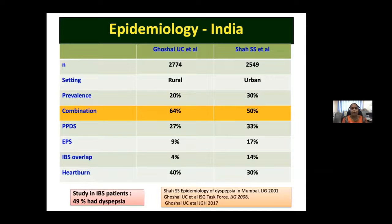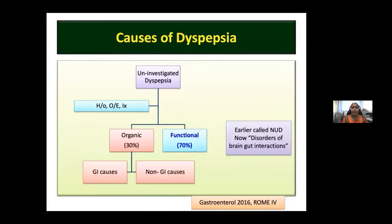About 4 to 14 percent of dyspeptic patients have heartburn, which does not necessarily translate to GERD. In a large study, 49 percent of IBS patients had associated dyspepsia. There are three terminologies: uninvestigated dyspepsia refers to any patient presenting for the first time; after history, examination and investigations, they can be classified as organic or functional. Organic causes comprise about 20 to 30 percent; functional dyspepsia accounts for the bulk — about 70 percent.